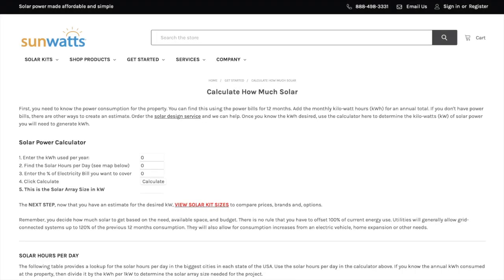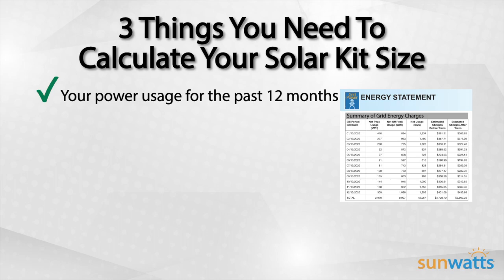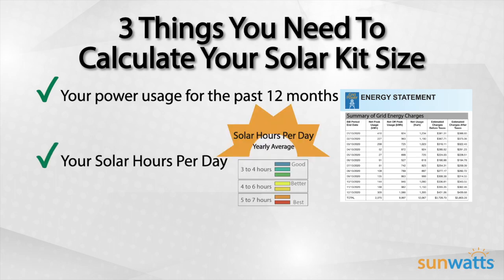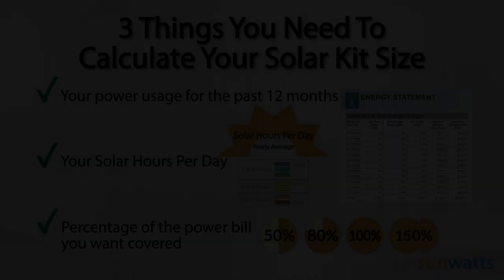To estimate your solar system size, you'll need three pieces of information to calculate the solar kilowatts. First, your utility power bills for the last 12 months. Second, the solar hours per day for your location. And third, the percentage amount of your power bill you want to be covered. Now let's look at each item in more detail.